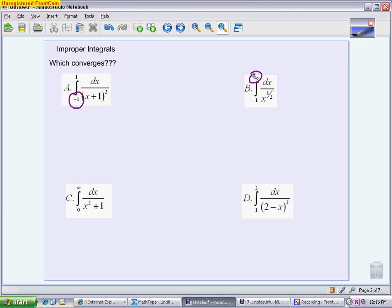For letter C, it's the same as B. We have an infinity as my upper boundary. And then for letter D, the issue is we have the upper boundary that cannot be plugged in directly because it gives us a 0 in the denominator.